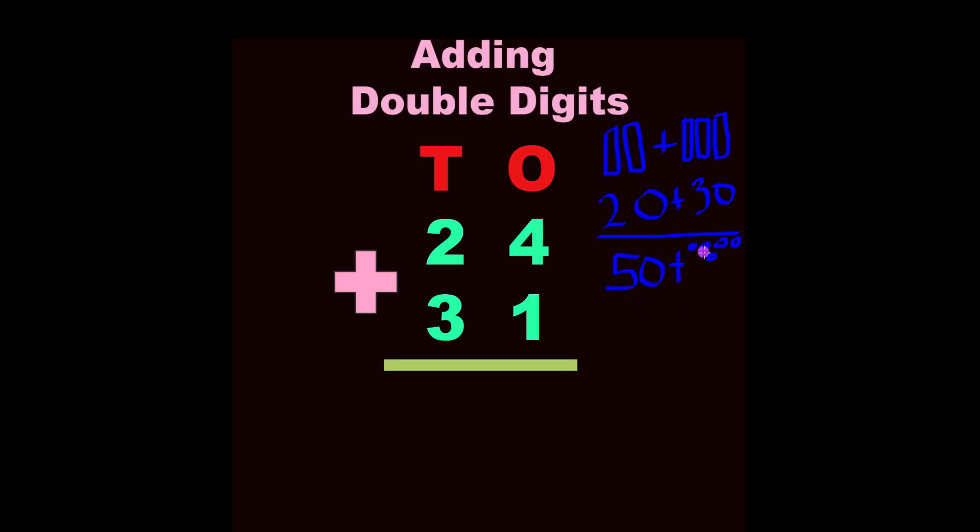So now what do we have? 50 plus 1, 2, 3, 4, 5. We have 50 plus 5. So let's count that. We have 10, 20, 30, 40, 50, 51, 52, 53, 54, 55. So we know our answer is going to be 55.